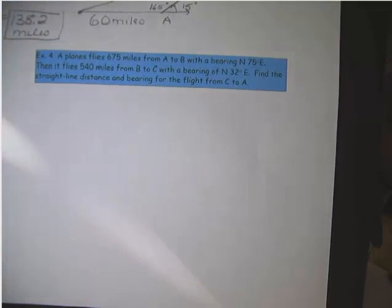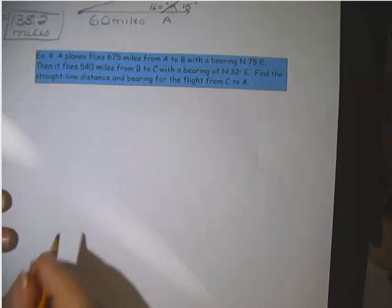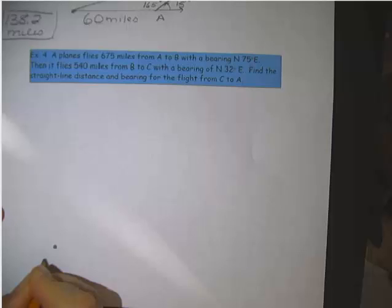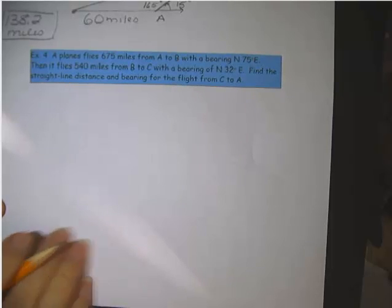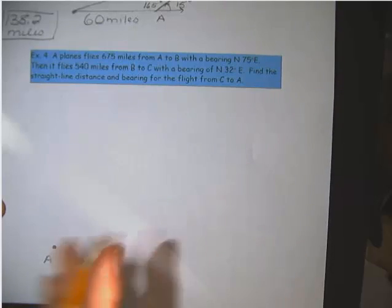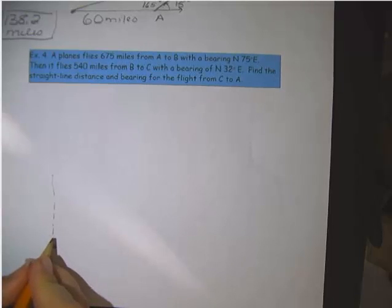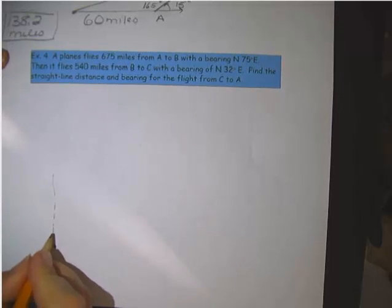This is a bearing problem. A plane flies 675 miles from A to B with a bearing of 75 degrees east of north. Okay, so we're going to start down here at A. I'm just starting here because I know if I'm moving east of north, I'm probably going to be moving towards this direction. So we want our northern axis, just like we did before.